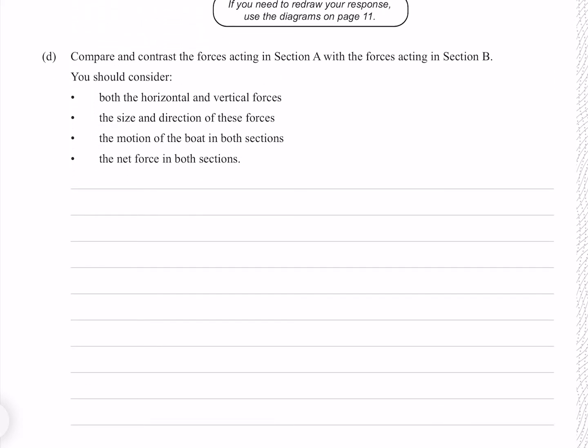Compare and contrast the forces acting in section A with the forces acting in section B. You should consider both the horizontal and vertical forces, the size and direction of these forces, the motion of the boat in both sections, and the net force in both sections. I'm going to approach this by having a column for section A and a column for section B. Starting with our point here, in section A the boat is accelerating, whereas in section B it's going at a constant speed.